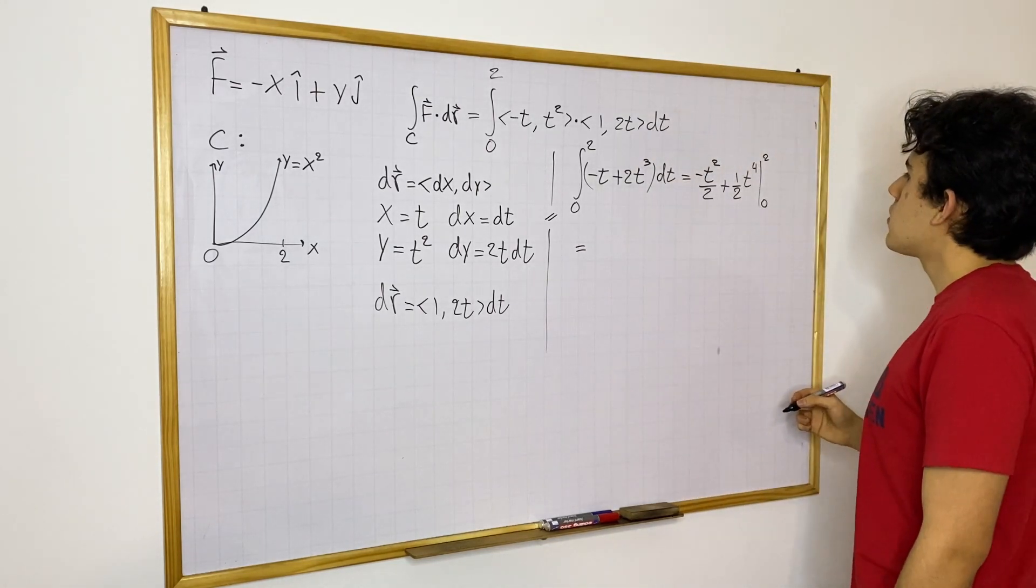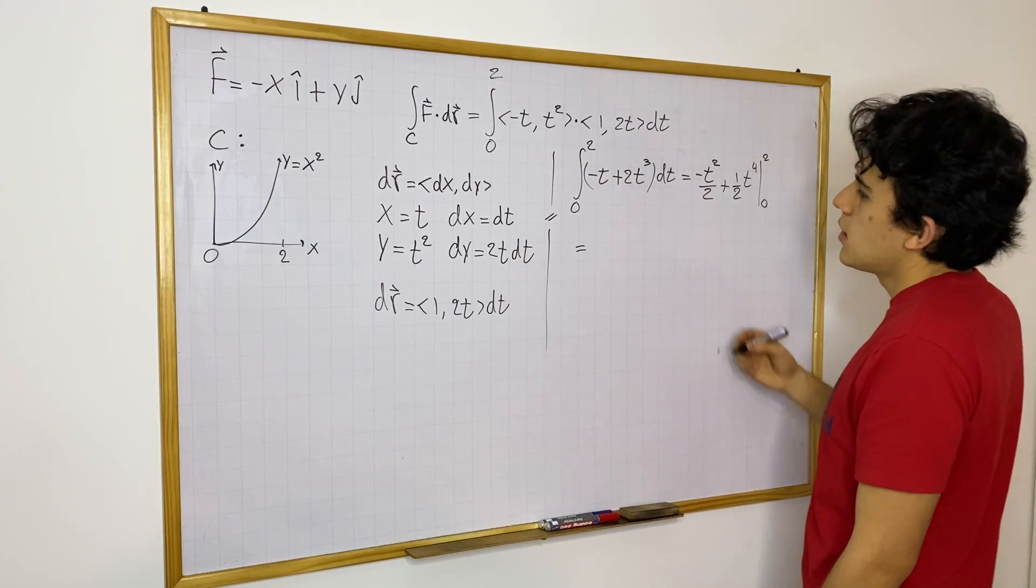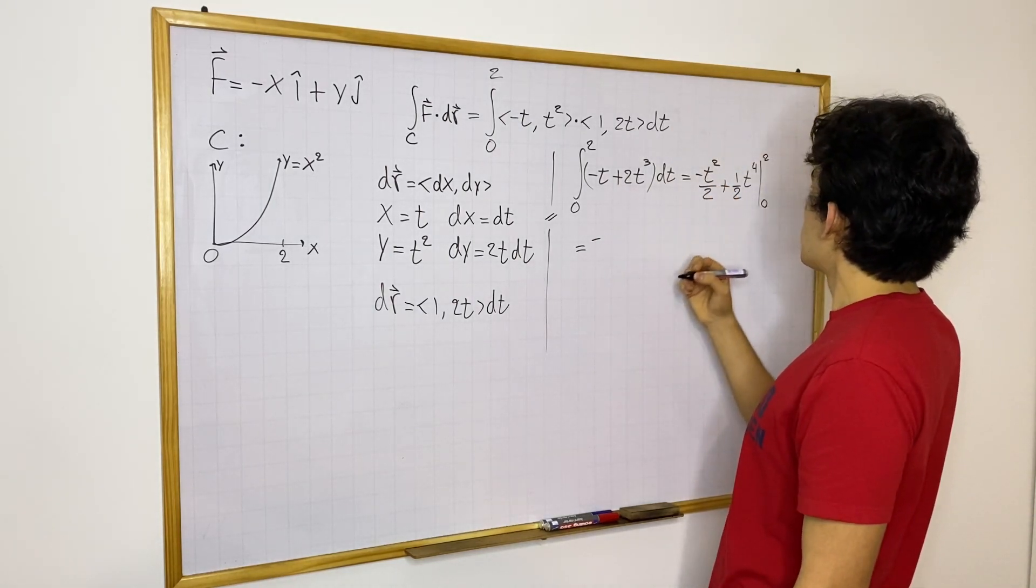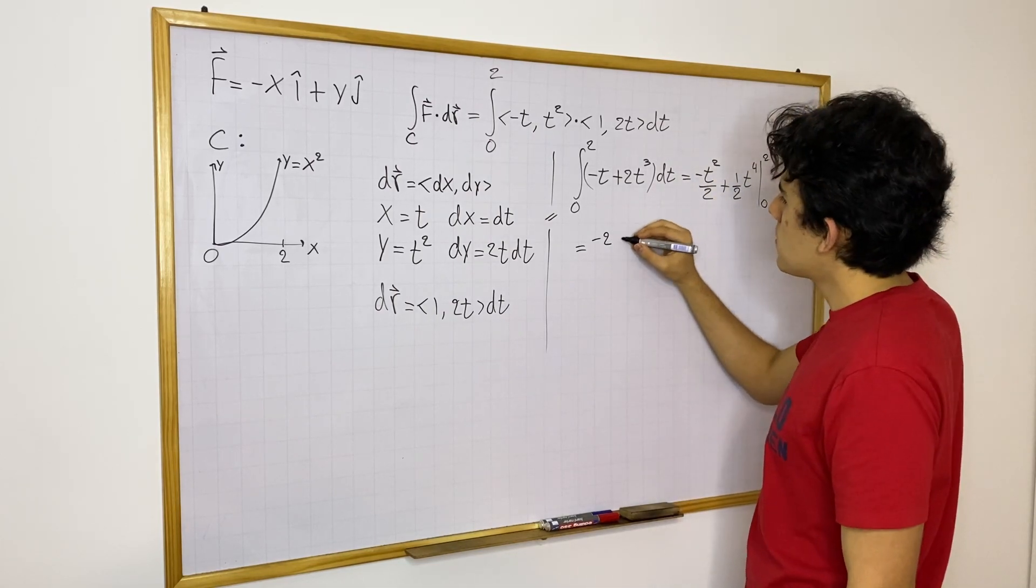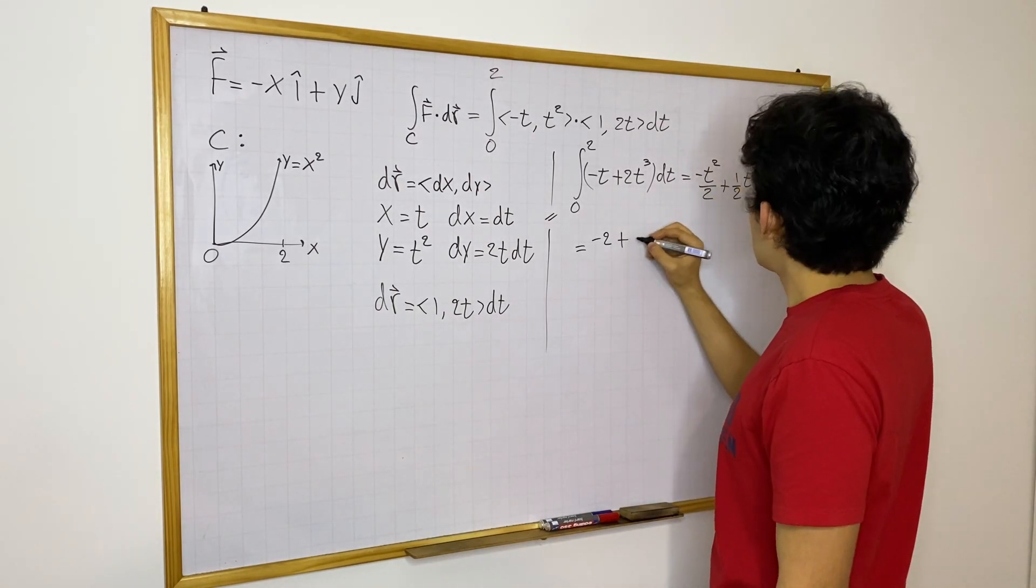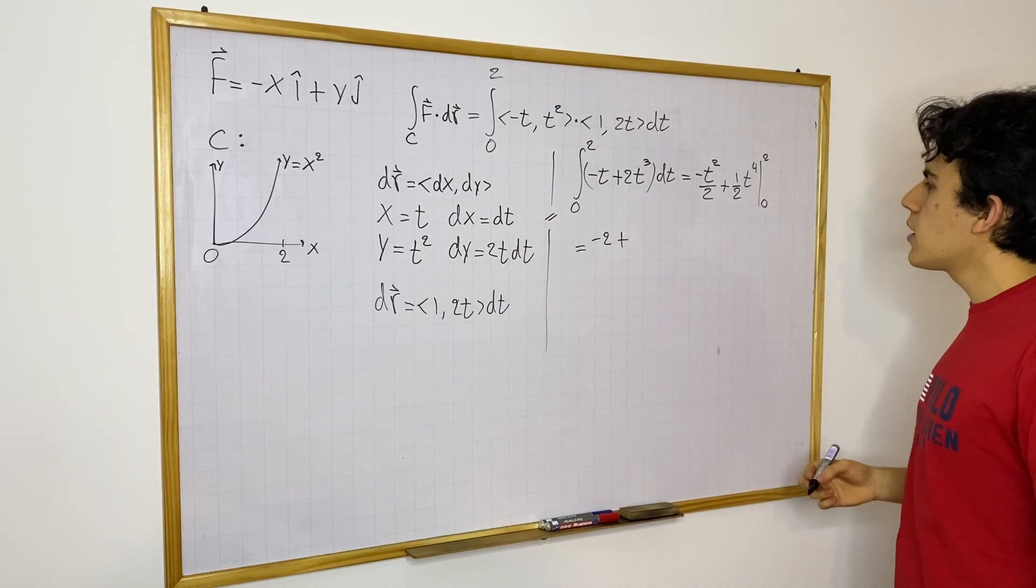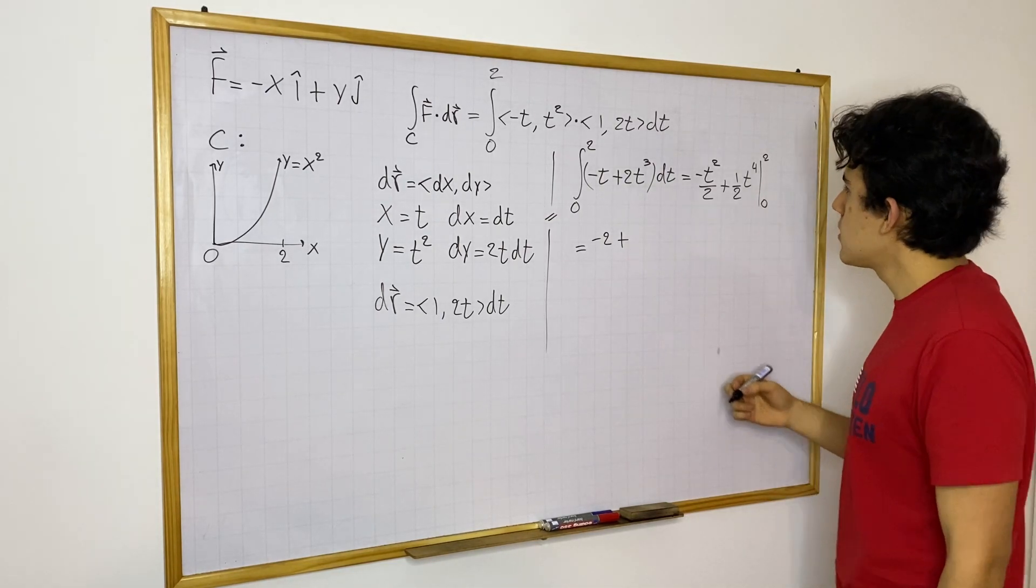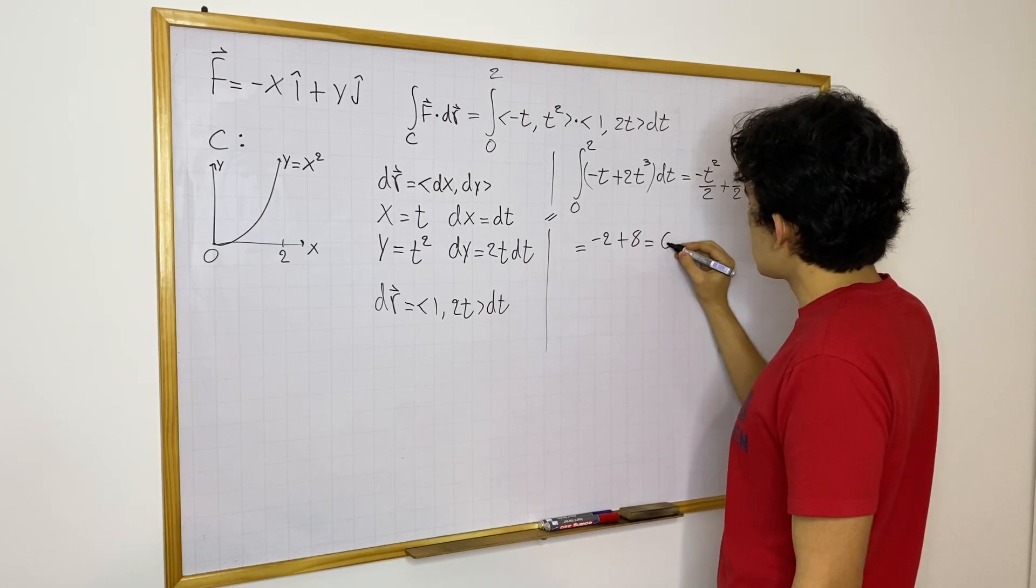And this will be, so then, at 0, this entire thing is 0, so that's great. So then we just have minus 4 divided by 2, so 2 squared divided by 2, that will be 2, plus, now we have 2 to the fourth power, that is the same as 4 squared, which is the same as 16, and then divided by 2, that is 8. So then we have 6.